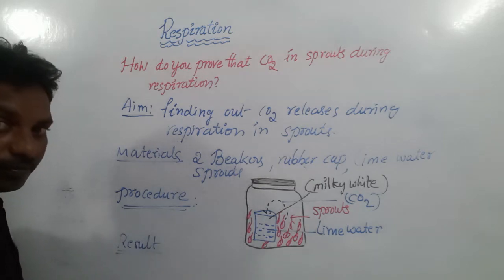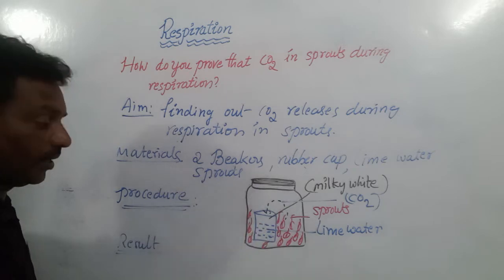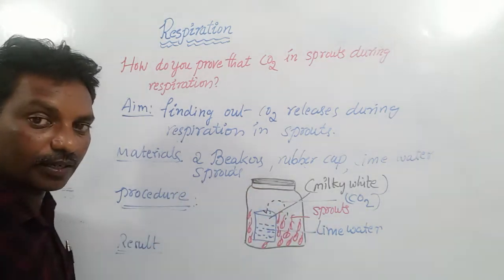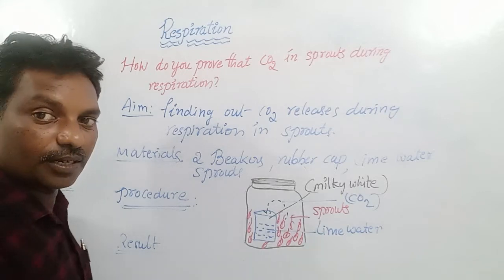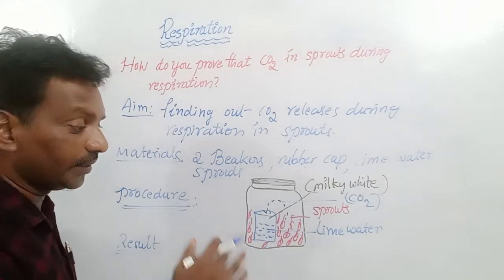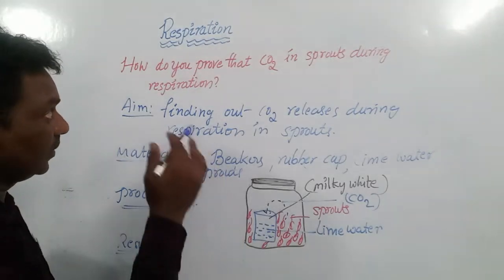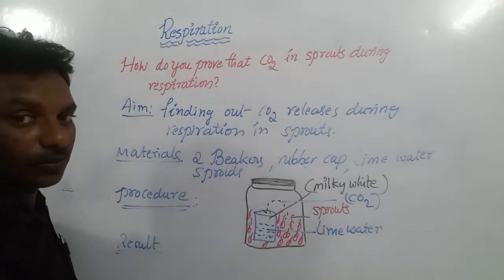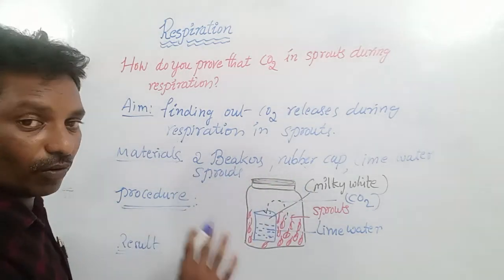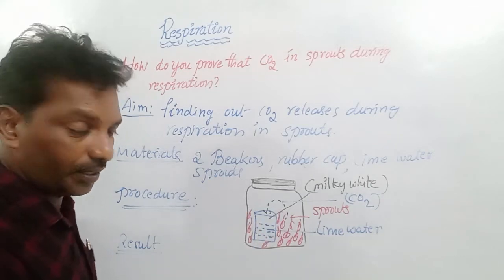The result is: the sprouted seeds release some air which is sent into the lime water. The lime water turns milky white because that gas is carbon dioxide. So the result is that carbon dioxide is released from sprouted seeds during respiration.